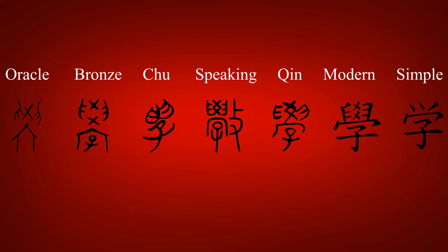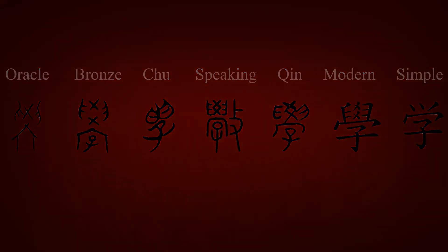The kanji for child was later added because of the association of childhood learning at schools. Over time, the roof radical was shortened, and the child and hands radicals were simplified, creating the modern form we know today.